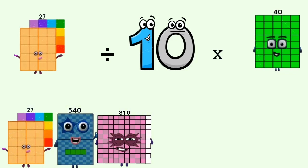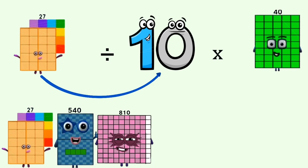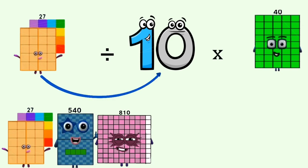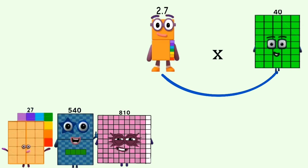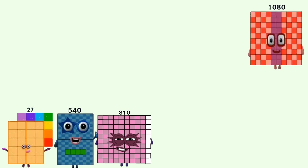27 divided by 10 equals 2.7. 2.7 times 40 equals 1,080.